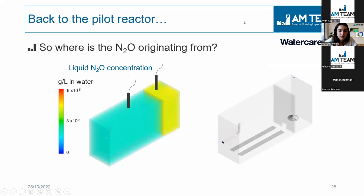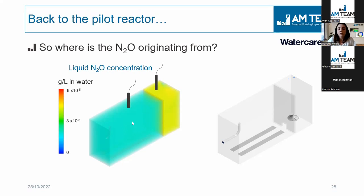Back to the pilot reactor: here we see the N2O concentration in the liquid in the anoxic and aerobic zones. What is interesting is that the concentration is quite homogeneous in the reactor — higher in the anoxic zone and slightly lower in the aerobic zone. If we place sensors, we are actually measuring the symptoms, but we don't know exactly where N2O originates from or why it is produced.